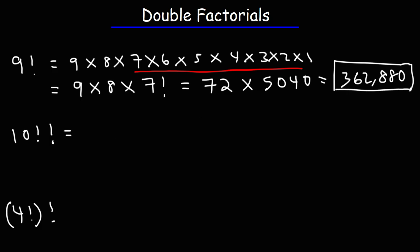Now, the double factorial of 10, that's going to be 10 times 8 times 6 times 4 times 2. 10 times 8 is 80. 6 times 4 is 24 times 2. 24 times 2 is 48.